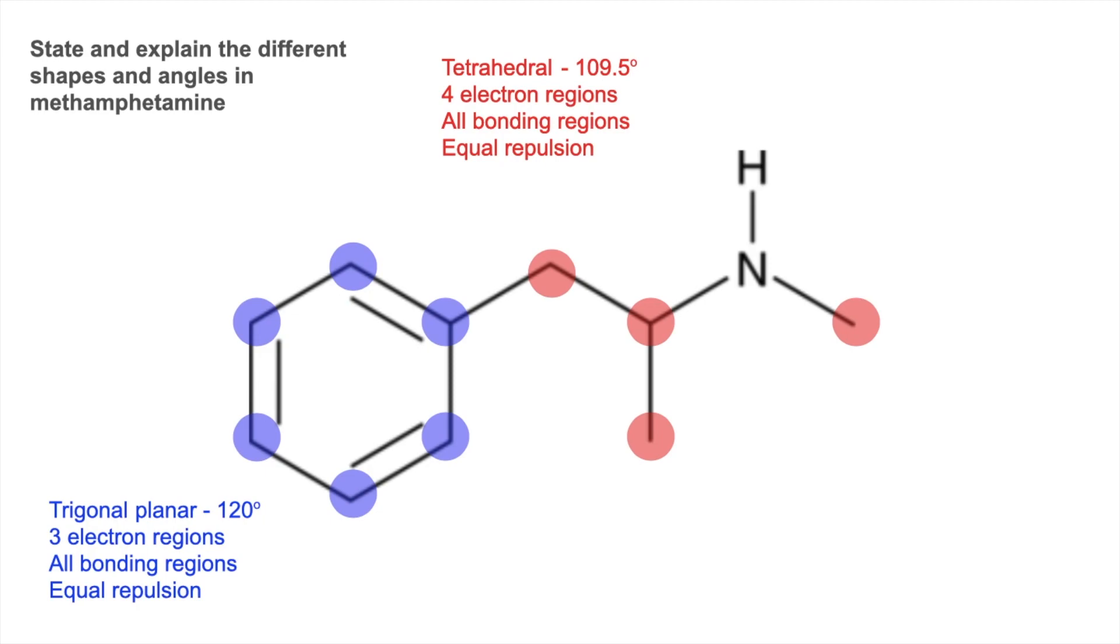Okay, so the last one we'll look at is this green nitrogen here. So the shape and angle around that is pyramidal, 107 degrees.